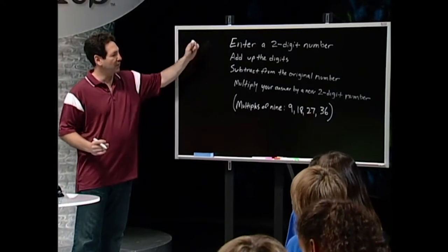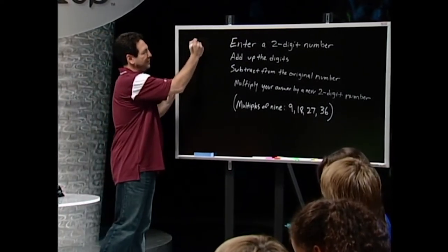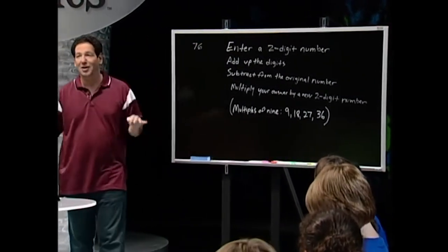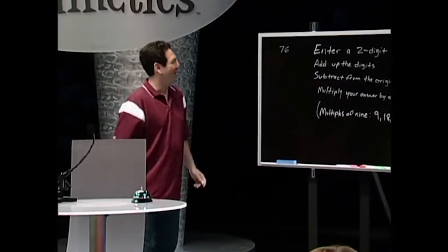Step number one, I want everyone to put a two-digit number into their calculator. So say I pick the number 76. I would be punching 76 into my calculator. Don't punch 76 into your calculator. Punch any other number you want.